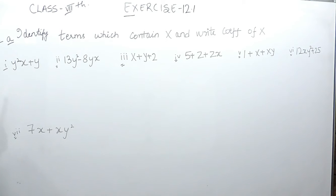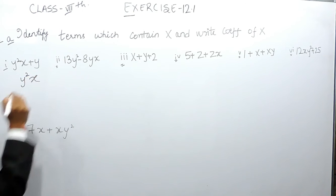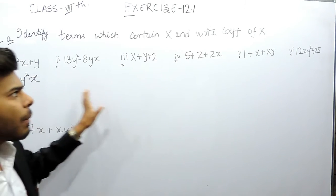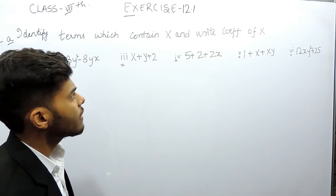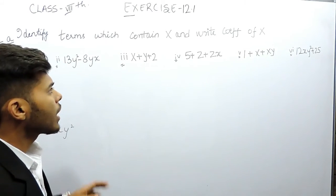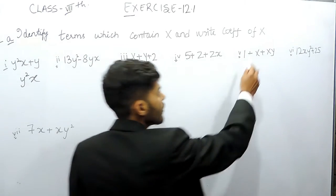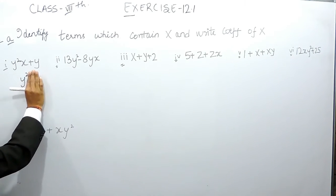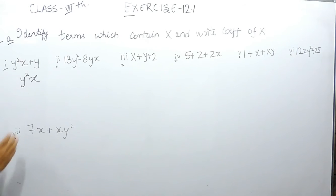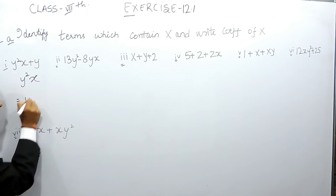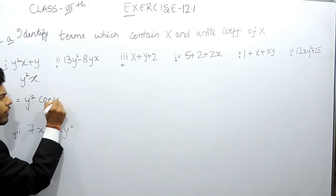In part one, only the first term has x in it, so we'll write it — that is y squared x. Now when we have to write the coefficient of x, we exclude x and write the rest of it. So we'll exclude this x and write the remaining part, which means y squared is the coefficient of x.